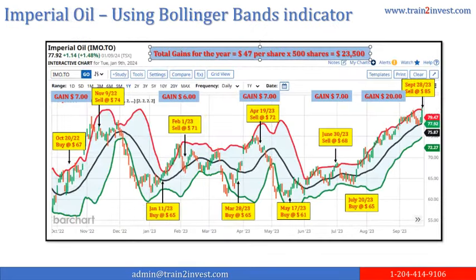Imperial Oil. Using the Bollinger Band indicator, a net profit of $23,500 was recorded. Looking at the chart from left to right: October 20, 2022, bought at $67; November 9, 2022, sold at $74 for a gain of $7 per share. January 11, 2023, bought at $65; February 1, 2023, sold at $71 for a gain of $6. March 28, 2023, bought at $65; April 19, 2023, sold at $72 for a gain of $7. May 17, 2023, bought at $61; June 30, 2023, sold at $68 for a gain of $7.